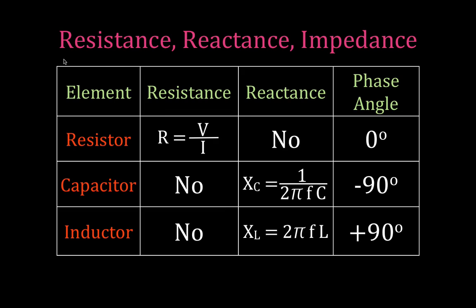This is the summary table for resistors, capacitors, and inductors. For a resistor: resistors have resistance, the resistance is the ratio of the voltage to the current, a pure resistor has no reactance, and it has a phase angle of 0 degrees. For a pure capacitor: it has no resistance but does have reactance, calculated as 1 over 2π times the frequency times the capacitance. The phase angle is minus 90 degrees because the voltage lags the current — the angle between the current and the voltage is minus 90 degrees.